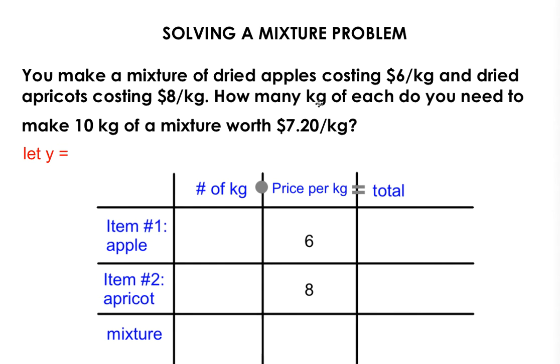In our next sentence, it says how many kilograms of each do you need to make a 10 kilogram mixture? So your mixture and the number of kilograms you will populate with the number 10. And the value of that mixture per kilogram is $7.20, so your price per kilogram for the mixture in this cell will be $7.20.